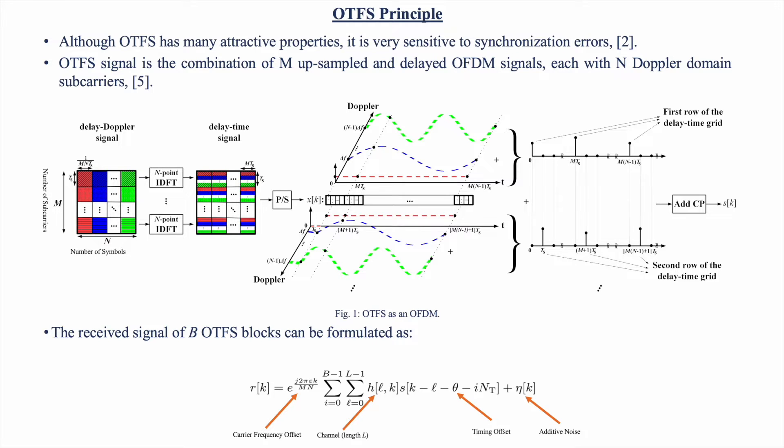Here, we can see the received signal in OTFS, which is affected by the exponential, by this multiplying exponential, that's the effect of carrier frequency offset, and this theta as a delay at the receiver side as the effect of timing offset.